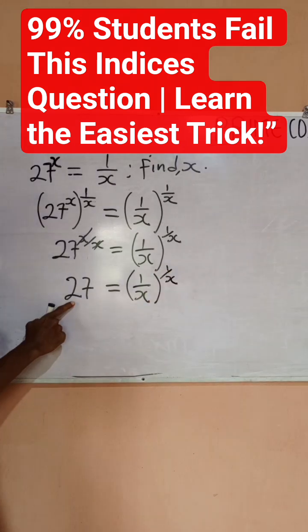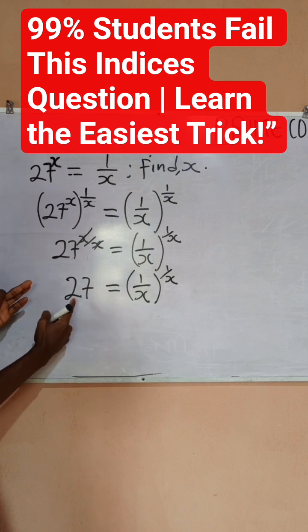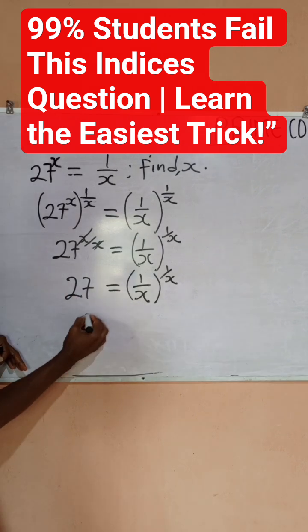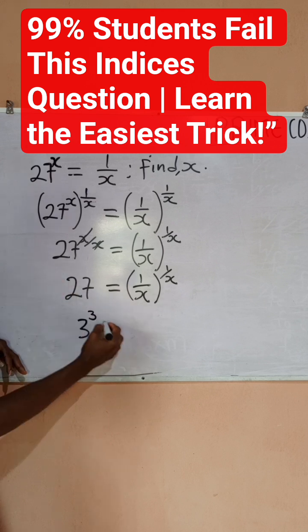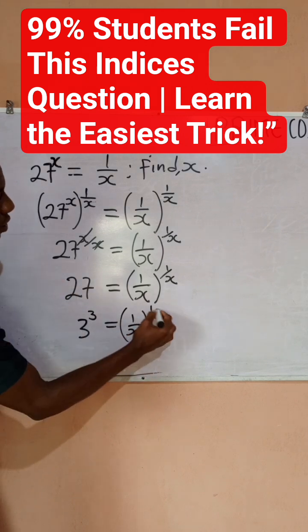You would notice that 27 can be written as an indices. You can write 27 as 3 raised to power 3, which equals 1 by x raised to power 1 by x.